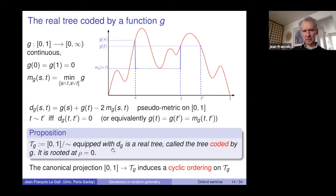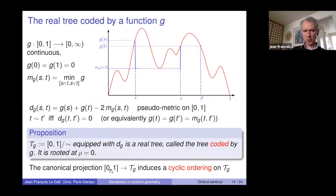Here is the definition of the tree coded by a function g. This function g is defined on the interval [0,1], non-negative, continuous, and starts and ends at zero. I introduce the notation m_g(s,t) for the minimum of g between s and t, and define d_g(s,t) = g(s) + g(t) − 2·m_g(s,t), which is a candidate distance — the sum of the lengths of the two blue segments from s and t down to their minimum. This is only a pseudo-distance: you can have distinct points s and t with d_g equal to zero, which occurs when g takes the same value at t and t' and larger values between them. You identify t and t' if d_g(t,t') = 0. The quotient space of [0,1] under this equivalence relation, equipped with the induced distance, is a real tree — the tree coded by g. This coding gives a cyclic ordering via the canonical projection from [0,1] onto the quotient, providing a cyclic exploration of the tree.